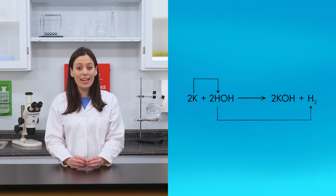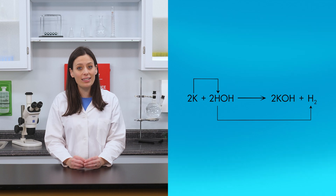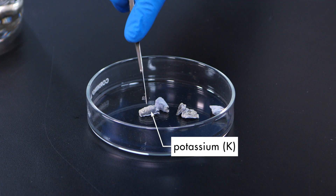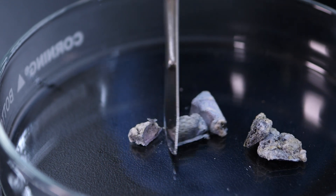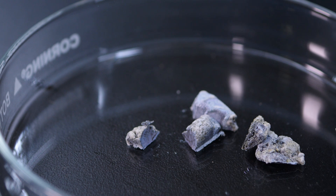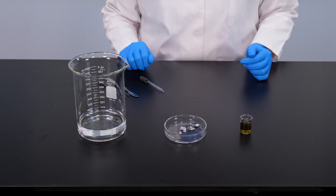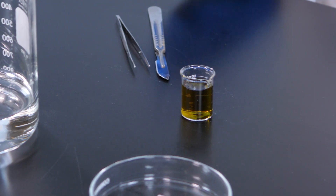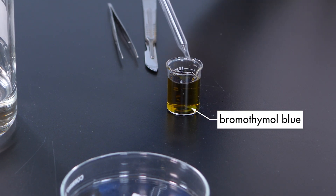The hydrogen that was replaced is given off as a gas. Like sodium, potassium is a highly reactive alkali metal that is so soft it can be cut with a knife. The reaction with water will produce potassium hydroxide, but we will not be able to see the product since it will be dissolved in water. To detect the presence of potassium hydroxide, which is a base, we need to use a pH indicator called bromothymol blue.